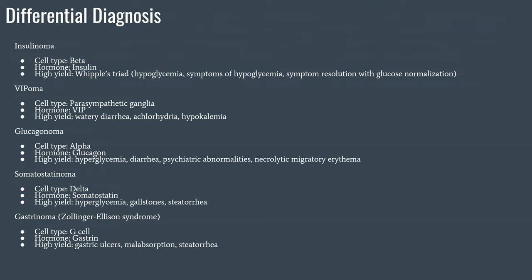This is the differential diagnosis. Adenocarcinoma is out — that's a separate tumor. These are specifically the endocrine types of tumors in the pancreas. We split these into the cell type, the hormone they generally produce, and the high-yield presentation or features you need to be aware of.